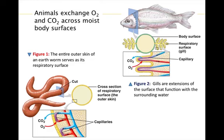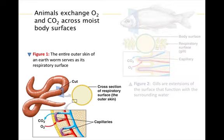The part of an animal where gases are exchanged with the environment is called the respiratory surface. Respiratory surfaces are made up of living cells whose plasma membranes must be wet to function properly. The earthworm is an example of gas exchange through the use of the entire outer skin; oxygen diffuses into a dense net of thin-walled capillaries lying just beneath the skin.